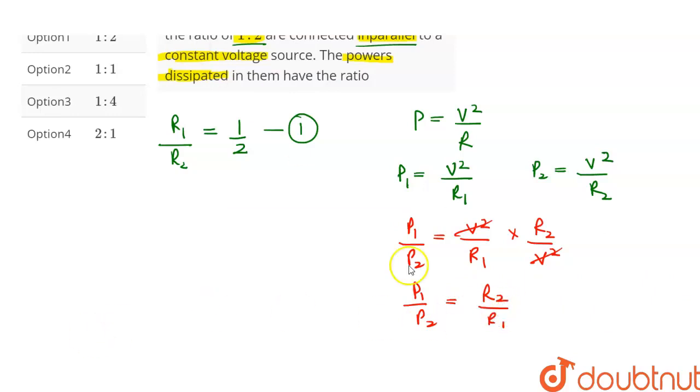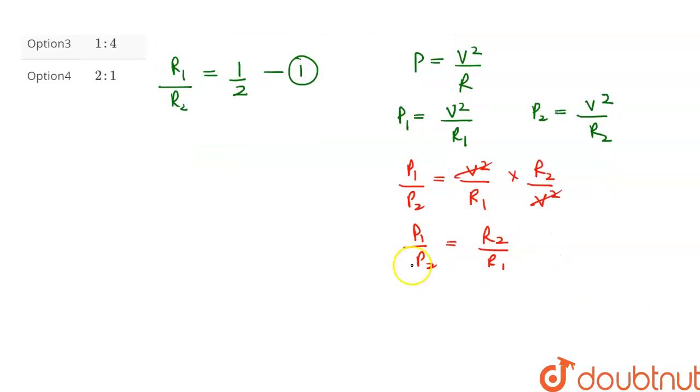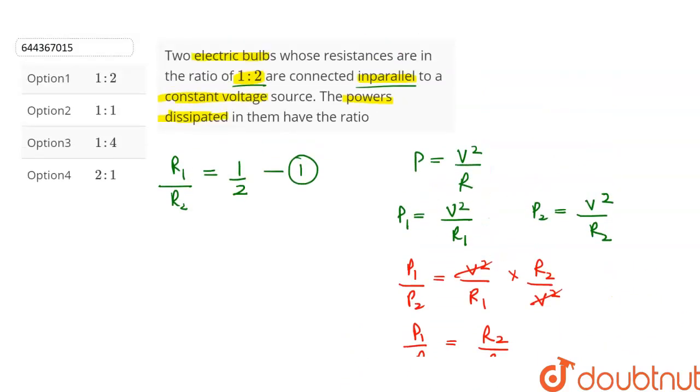Let's put the value of R2 upon R1 in this equation. This will give us P1 upon P2 is equal to 2 upon 1. So the ratio of P1 to P2 is equal to 2:1. So option number 4 will be the correct answer of this question.